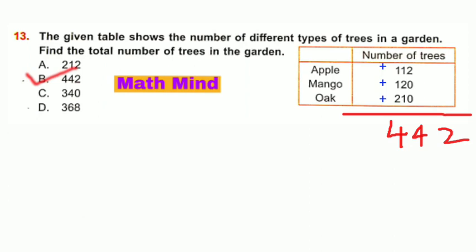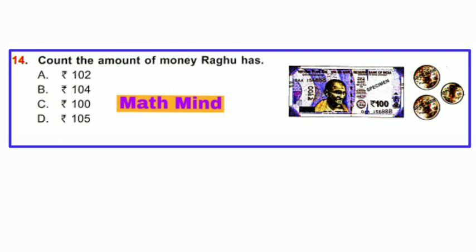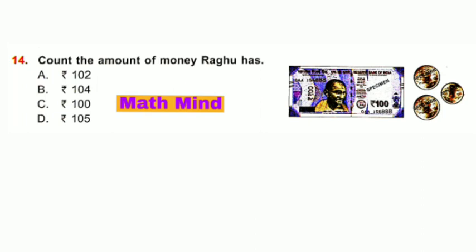Question number 14: Count the amount of money Raghu has. This is 100 rupees, this is 100 rupees, this is 2 rupees, this is 2 rupees, and this is 1 rupee. Counting all, we get 205. So, option D is correct.